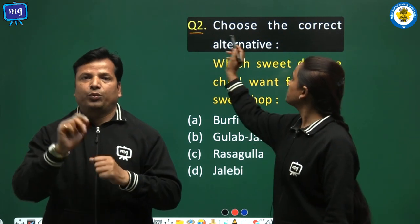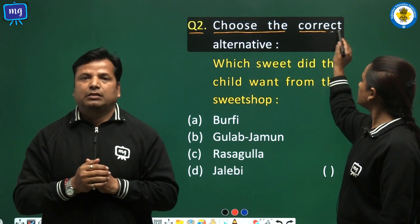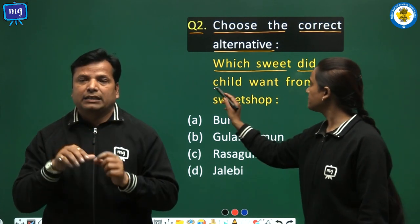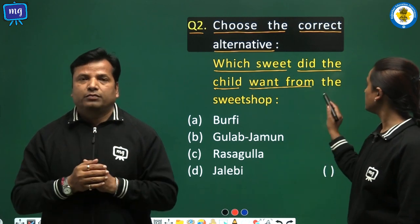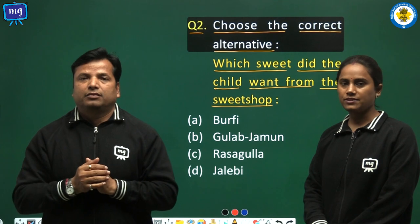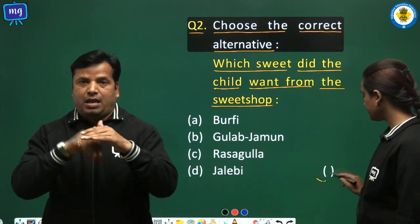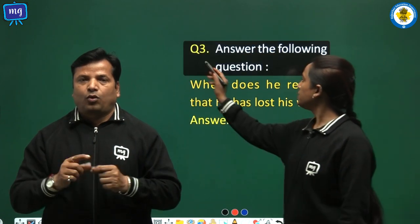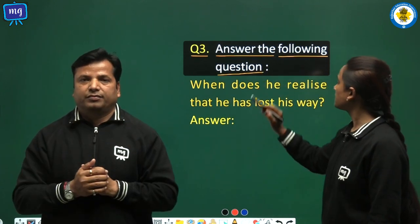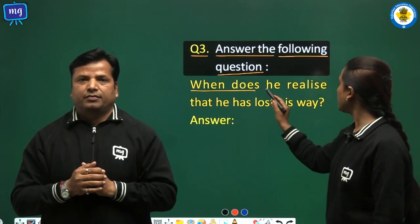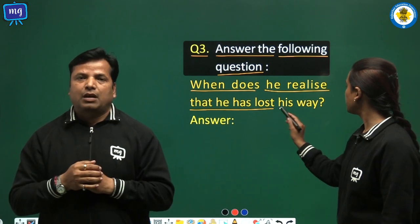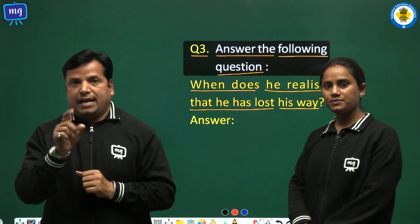Question Number 2: Choose the correct alternative. Which sweet did the child want from the sweet shop? Choose the correct answer and write it in the bracket. Question Number 3: Answer the following question. Question 1: When does he realize that he has lost his way? Write the answer yourself.